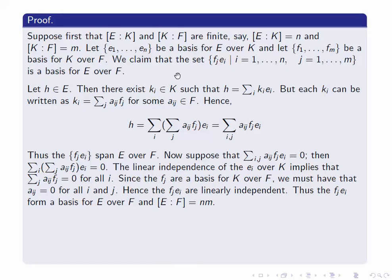Now we use the linear independence of the fⱼ over F. This combination has the fⱼ in K and the aᵢⱼ in F, so this is a linear combination of the fⱼ equal to zero. But these things are linearly independent over F, so each aᵢⱼ for j = 1,...,m must be zero. This is true for all i, so all the aᵢⱼ are zero. We've proved that the fⱼeᵢ are linearly independent over F. Now we've proved they span and are linearly independent, so the fⱼeᵢ form a basis for E over F, and the degree of this extension is n times m.